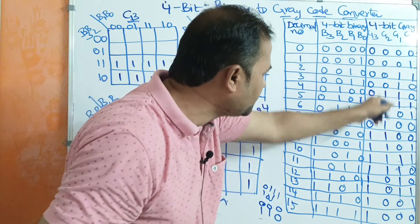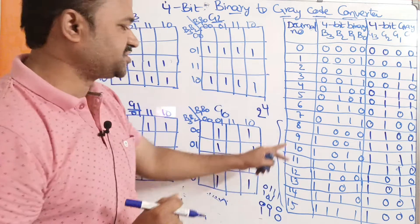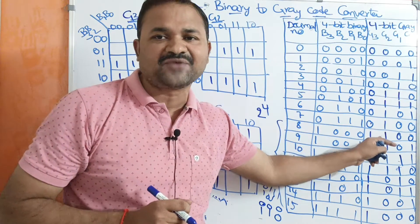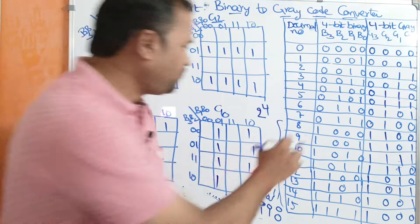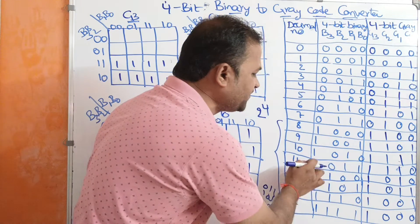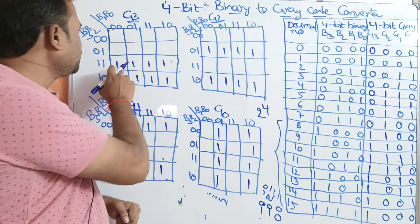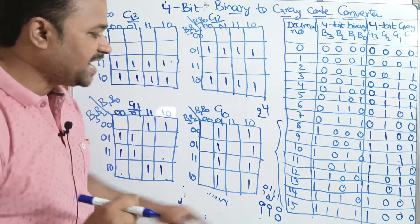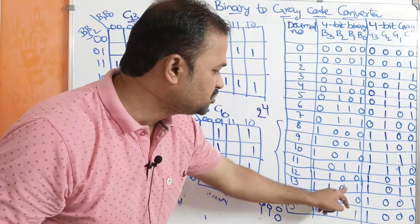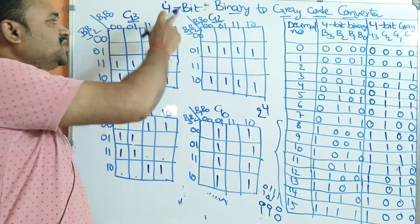Let us observe the G3 column. For all the last 8 combinations — where B3 is 1 — the output is 1. So we write 1 in the corresponding cells: for 1000, 1001, 1010, 1011, 1100, 1101, 1110, and 1111, the output is 1. In the Karnaugh map, we write 1 for all cells where B3 equals 1.